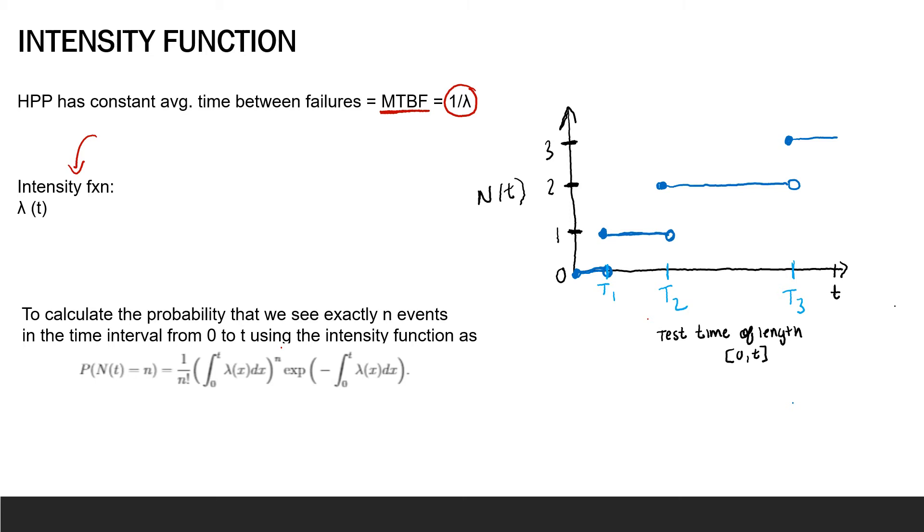The stationary increment assumption made calculating probability simpler since it only depended on the length of the time interval. Now we describe how many events we expect to see as changing with time. Hence, we denote the intensity function as lambda of t, because lambda is changing with t or time. The key takeaway in the NHPP case is that we have a way to mathematically understand the changing rate of failure, which is often useful when we are testing systems with the aim to improve the reliability of the system.